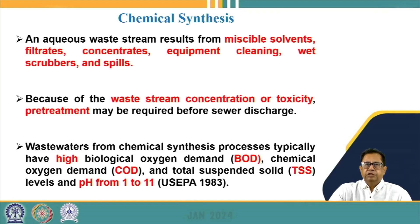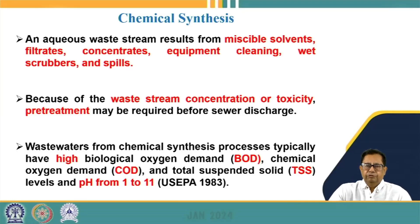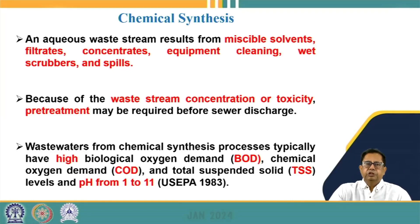The aqueous waste stream from chemical synthesis sources may result from miscible solvents, filtrates, concentrates, equipment cleaning, wet scrubbers, and spills — all contributing to the wastewater stream. This wastewater may contain high concentrations of toxic elements, requiring pre-treatment before discharge to sewer lines. Wastewater from chemical synthesis typically contains very high BOD, high COD, high total suspended solids, and pH ranging from 1 to 11.